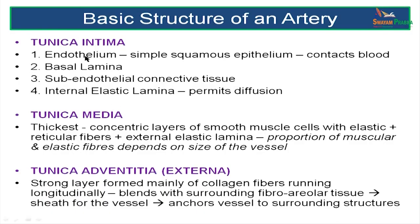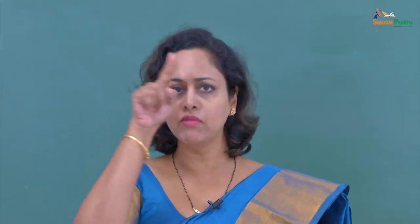Remember that arteries have a very thick tunica media compared to veins, which have a thicker tunica adventitia. The tunica intima is made up of an endothelium, a basal lamina, subendothelial connective tissue, and an internal elastic lamina. The media is made up of the thickest layer of concentrically arranged smooth muscle cells as well as elastic fibres and reticular fibres. The tunica adventitia is made up of collagen fibres running along the axis of the blood vessel.